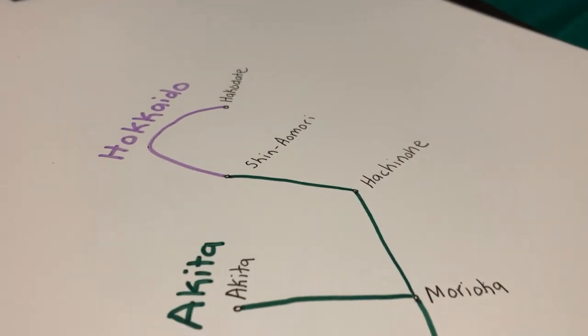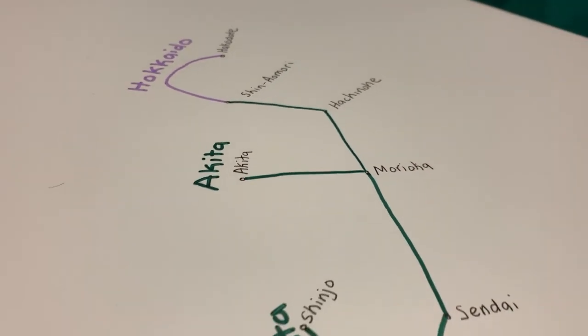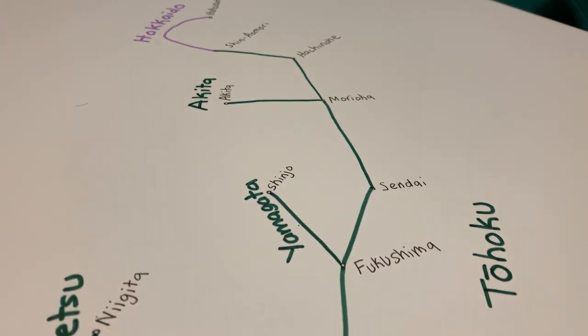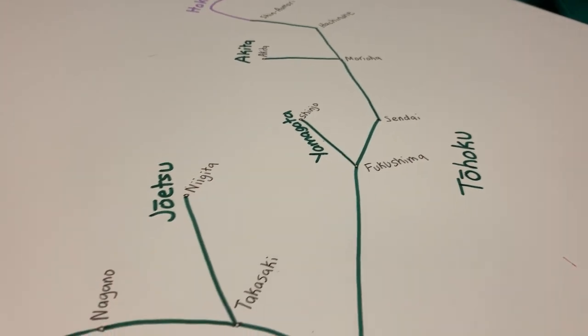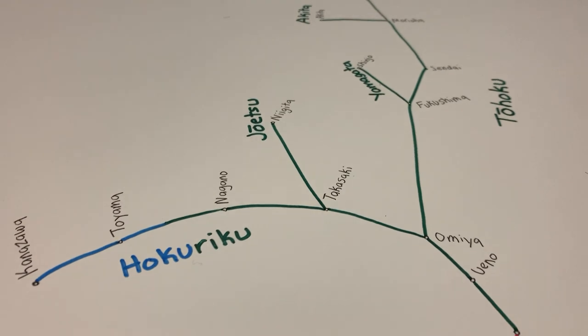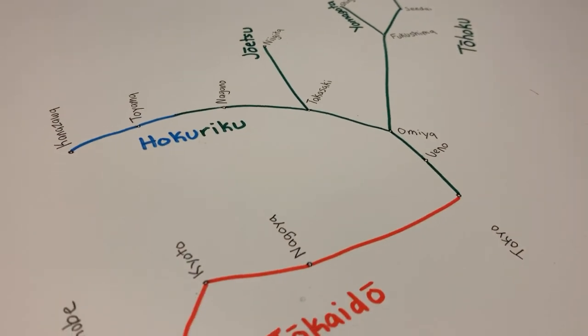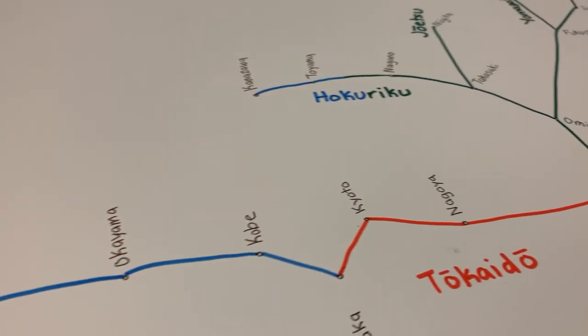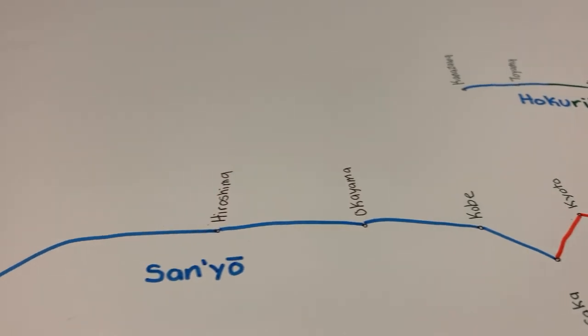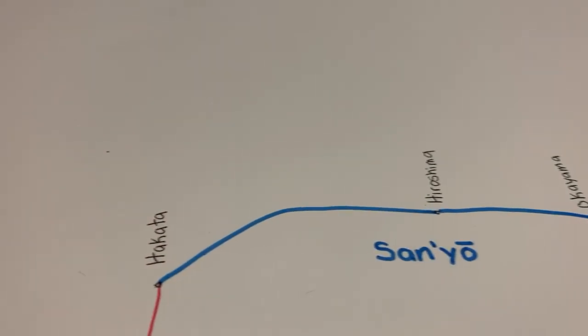And this, my friends, brings us to the current-day Shinkansen network, with nine lines divided among five JR groups. And over the next 15 to 20 years, this map will continue to change, with many Shinkansen projects under construction.